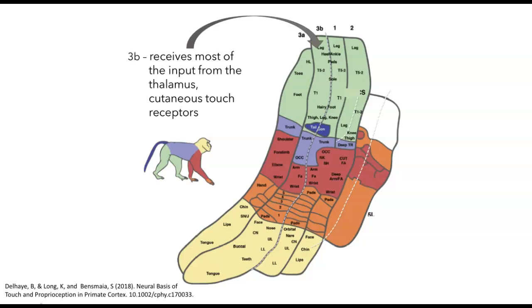Area 3b is the true primary somatosensory cortex. This is the part that receives most of the input from the thalamus. Most of that input, about 90%, comes from cutaneous touch receptors, so it's information from the skin surface and mostly mechanosensory, although there will be some temperature, some pain, and some proprioceptive as well. Area 3a also receives information from the thalamus, but it's mostly involved with proprioception, so muscle stretch and joint position.